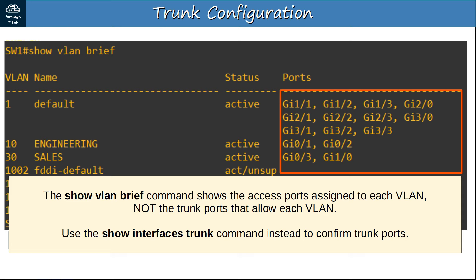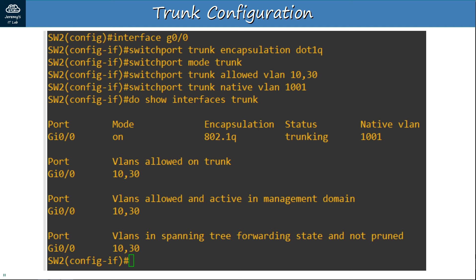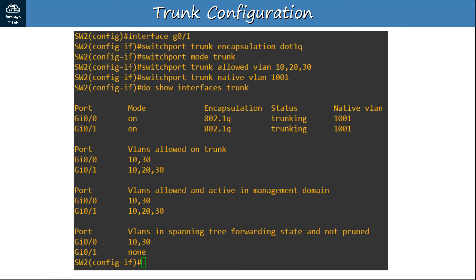Now for the configurations on SWITCH2. On SWITCH2's G0/0 interface — connected to SWITCH1 — we allow VLANs 10 and 30, same as before. On SWITCH2's G0/1 interface — connected to R1 — we must also allow VLAN20 in addition to VLANs 10 and 30. The configurations are almost identical to G0/0, except VLAN20 is also allowed. Both G0/0 and G0/1 are now displayed in the output of 'show interfaces trunk'.